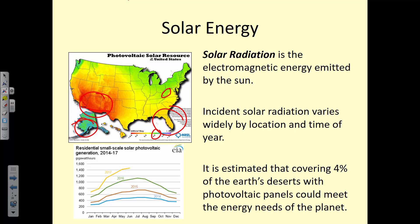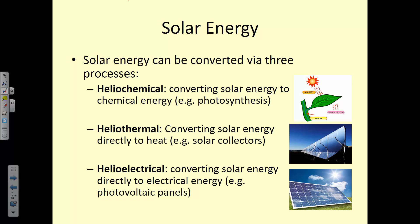It's estimated that if we covered just 4% of the Earth's deserts — in Southern California, Arizona, the Middle East, Africa, or China — with solar panels, we could generate all the energy the Earth needs. That sounds great, but it's expensive and there are difficulties with cross-border electrical transfer. Solar energy can be converted via three mechanisms: heliochemical, heliothermal, and helioelectrical.